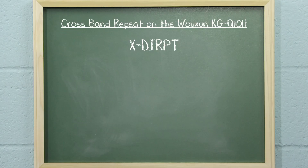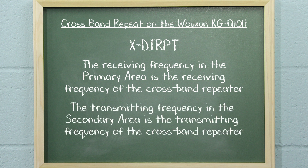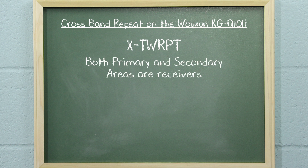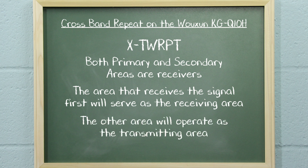With option XDIRPT, the receiving frequency in the primary area is the receiving frequency of the crossband repeater, and the transmitting frequency in the secondary area is the transmitting frequency. With option XTWRPT, both primary and secondary areas are receivers, and the area that receives the signal first will serve as the receiving area, while the other area will operate as the transmitting area.